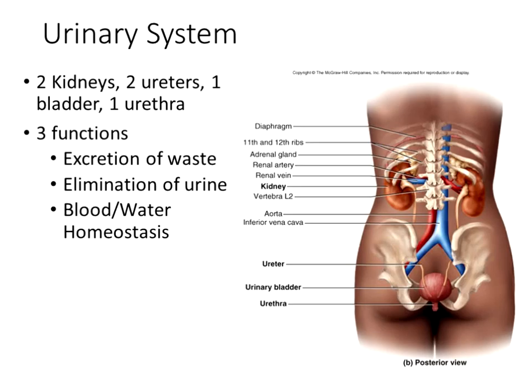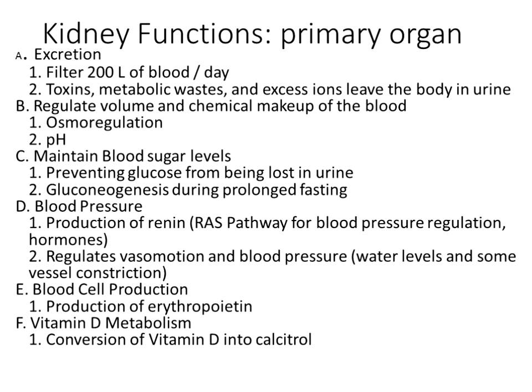The urinary system has three big functions: it excretes waste, it eliminates urine, and the kidneys are where we excrete waste products from the filtrate, secrete excess waste products into the filtrate, collect the filtrate, and eliminate the urine. Part of what we do in excreting and secreting is maintaining water homeostasis and maintaining blood pH homeostasis.